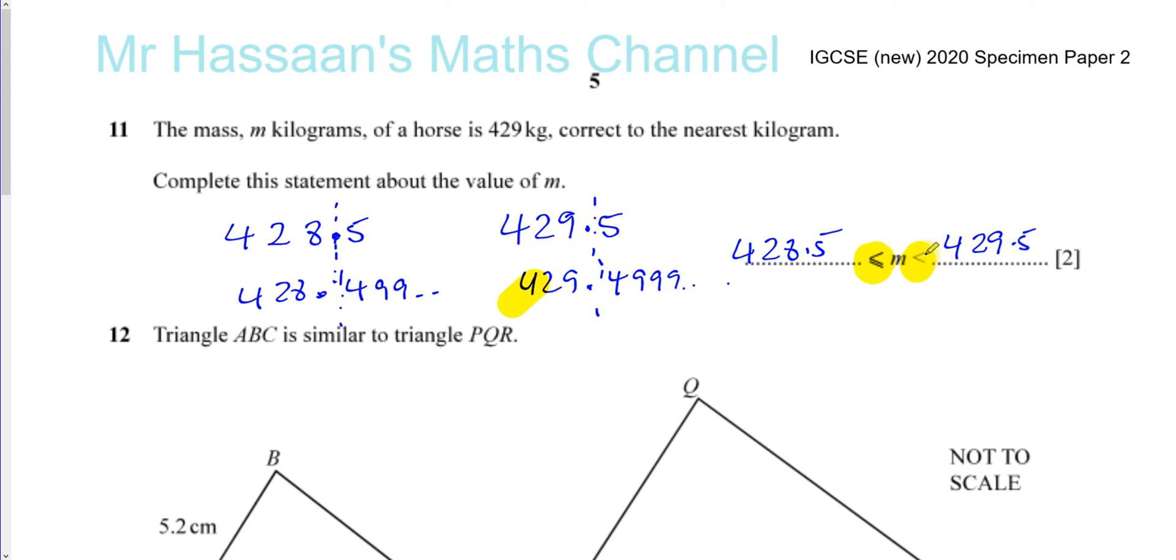And this inequality sign means everything up to, but not including that number, is included. I hope that's clear for you. That's an issue where a lot of students do have some confusion. So the upper bound doesn't mean this number rounds to 429. It means everything just below it rounds to 429.